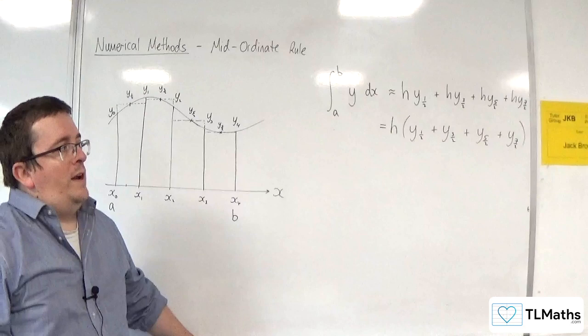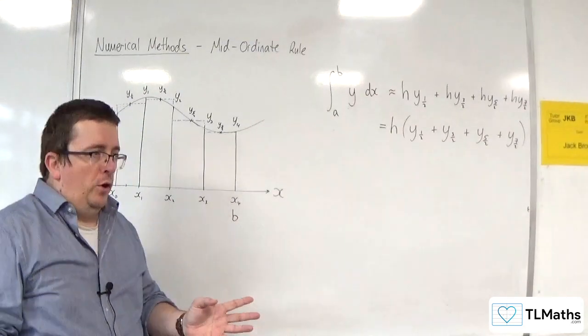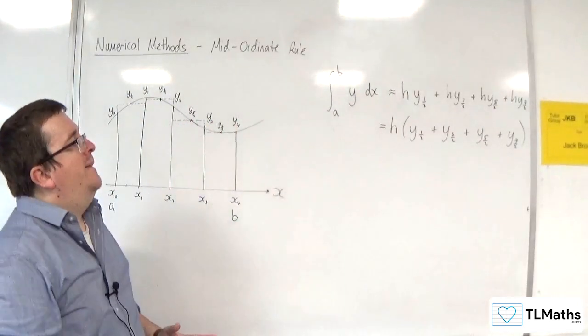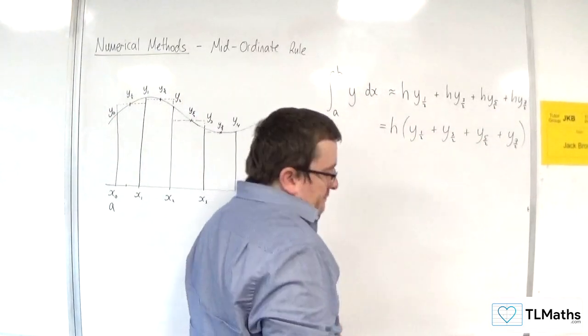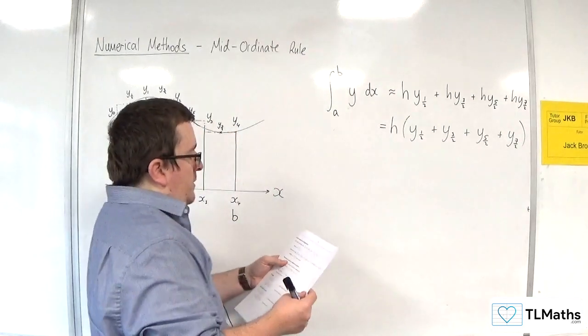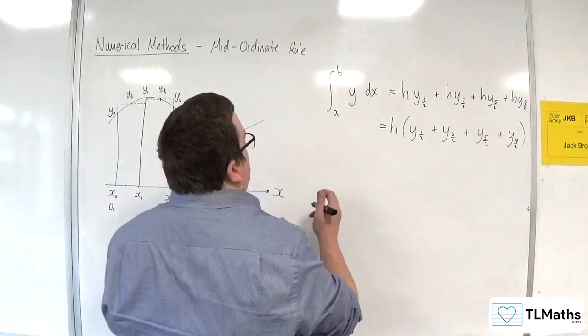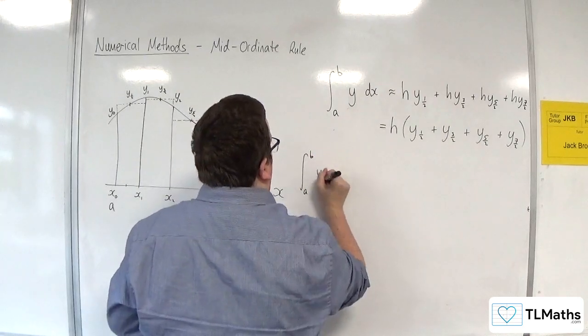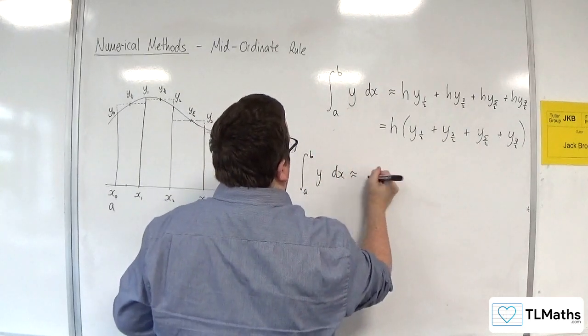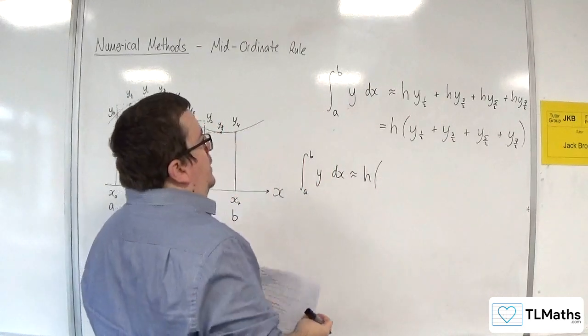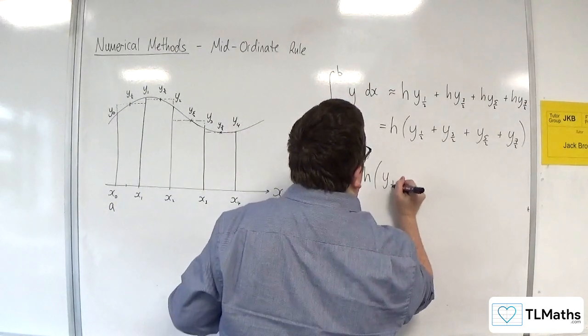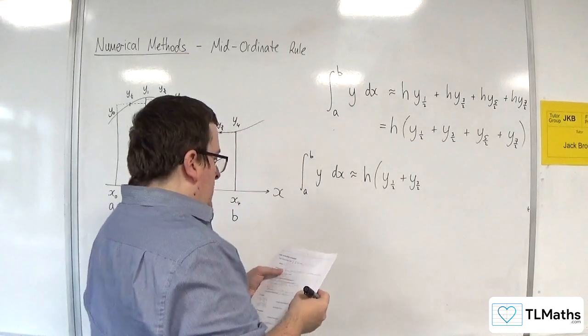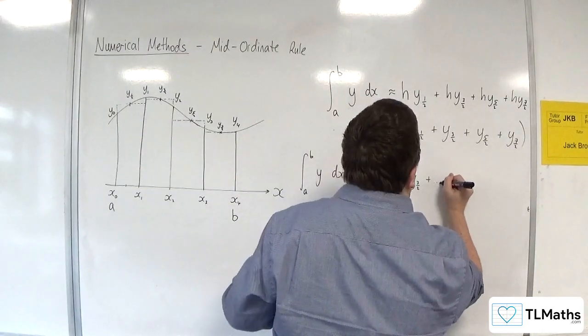When you see it in the formula booklet - there is the formula for this in the AQA formula booklet - between A and B, y dx will be approximately equal to h times y₁/₂ plus y₃/₂, then plus dot dot dot all the way up to